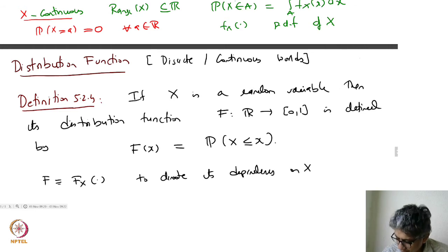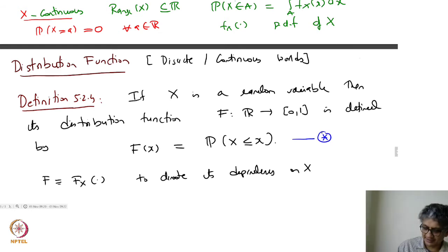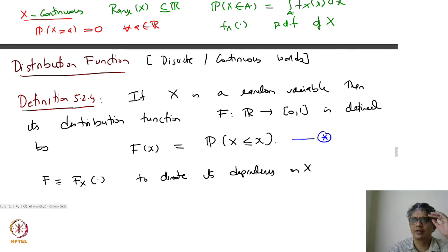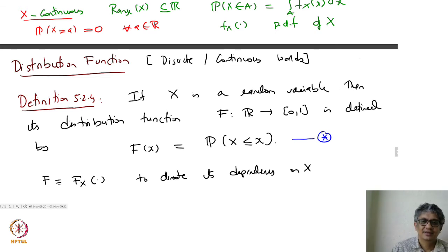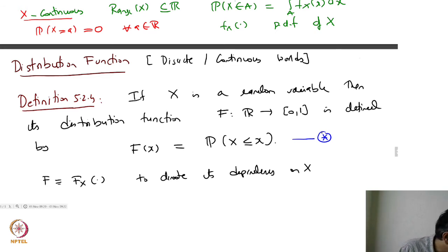You notice that this is a universal function that can be defined for any random variable — whether you have a discrete one or a continuous one, the right-hand side is well defined. The left-hand side is a quantitative feature of the distribution.